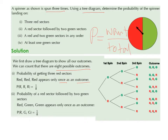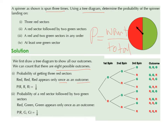Part 2: what's the probability of landing on a red sector followed by 2 green sectors? Looking at our outcomes, there is one option where we have red followed by 2 green sectors — that's RGG — and it appears only once as an outcome. So the probability of RGG is 1 over 8.